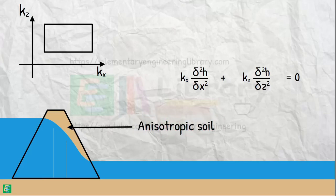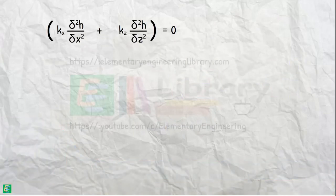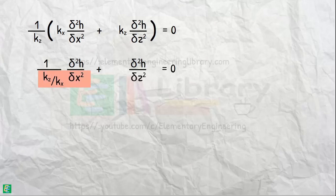So, to bring Laplace equation out of this equation, we have to modify some elements in this equation. Let us divide the whole equation by kz and write this part of the equation as this.